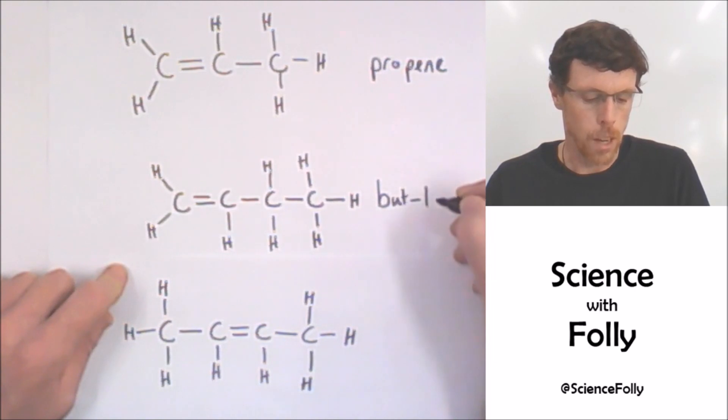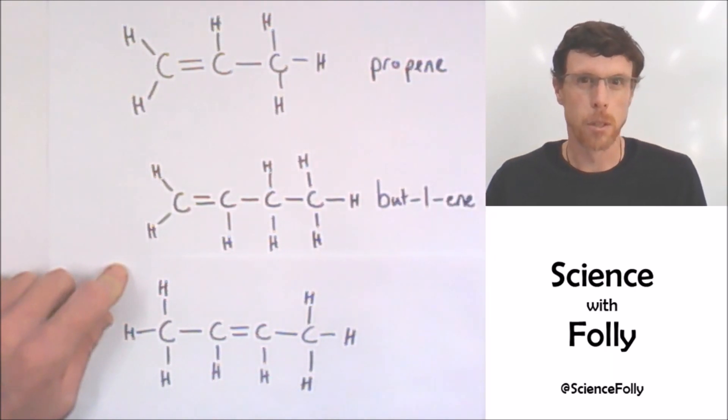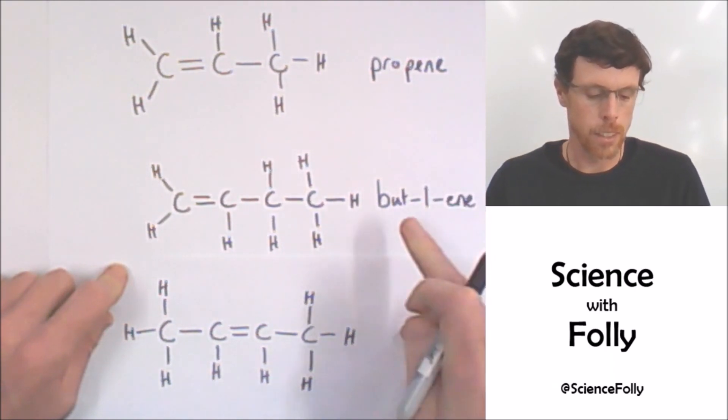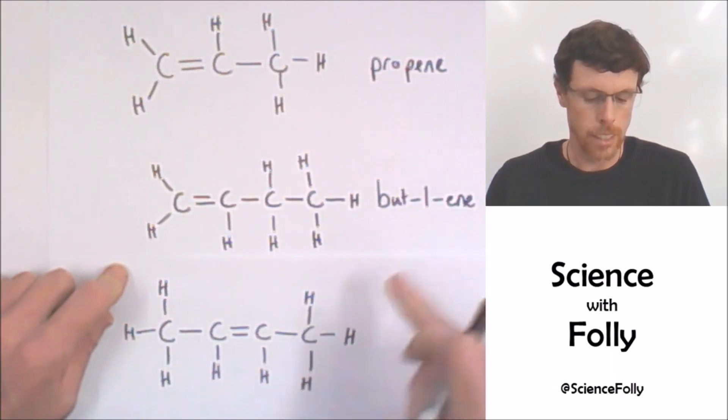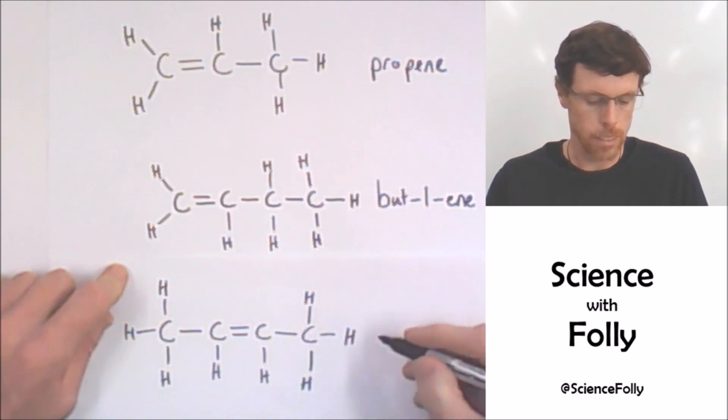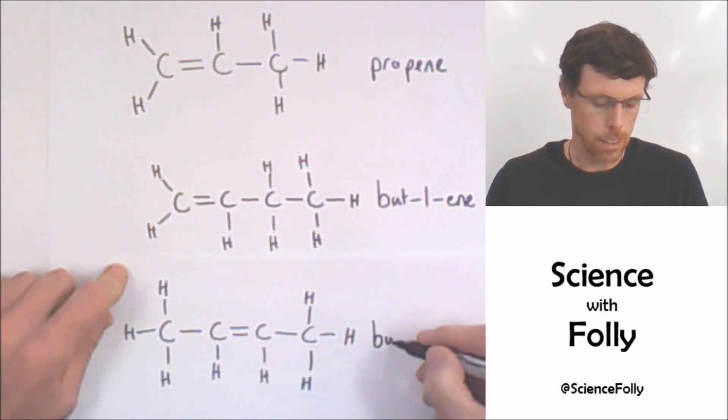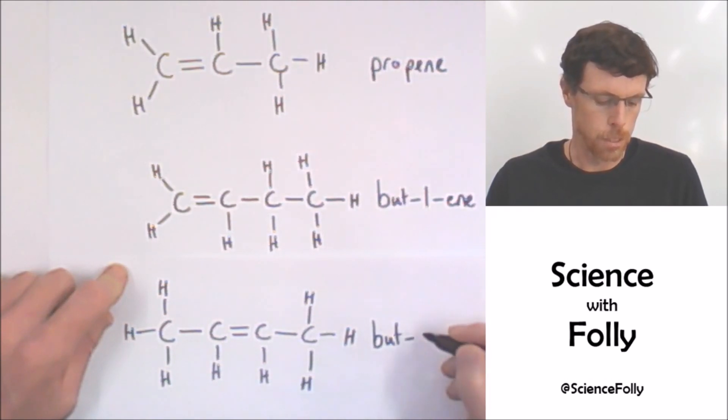We specify where the double bond is by putting a number between 'but' and 'ene' — in this case a one for but-1-ene, or a two for but-2-ene.